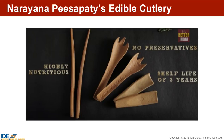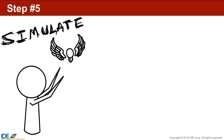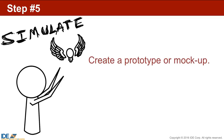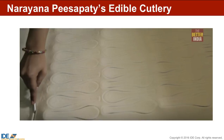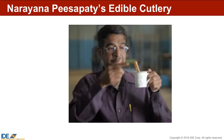Once you have an idea you think will work, it's time to give it wings — test it out, simulate the situation. Create a model, draw up a plan, design a storyboard — something you can test. If a solution can't actually be tested, you could survey people with the right expertise to tell you if they think it would work. Narayana had to try out his recipe and test his spoons, considering all situations — for example, would the spoon melt in hot tea?